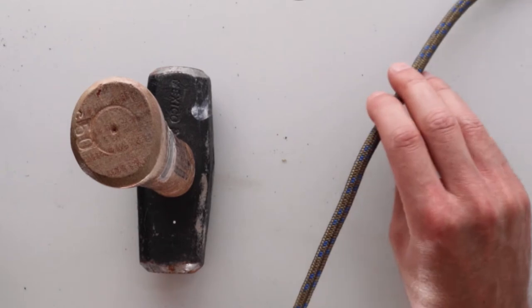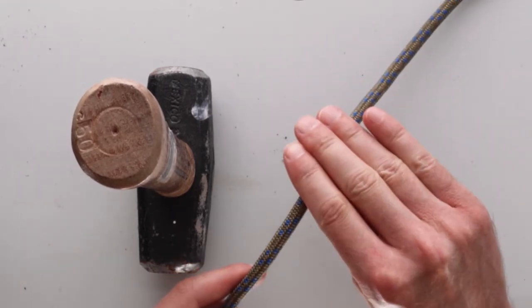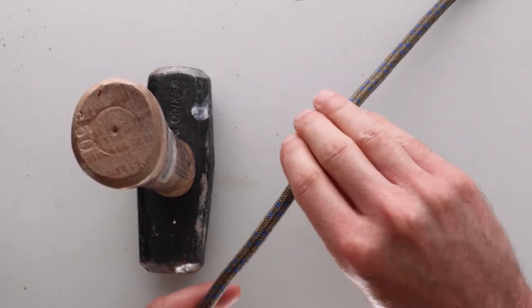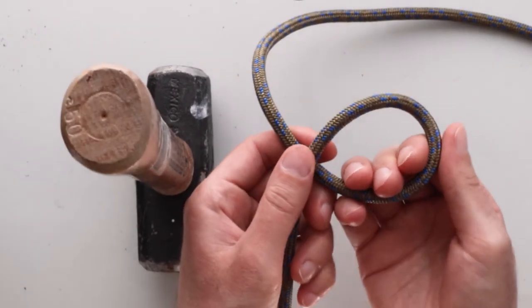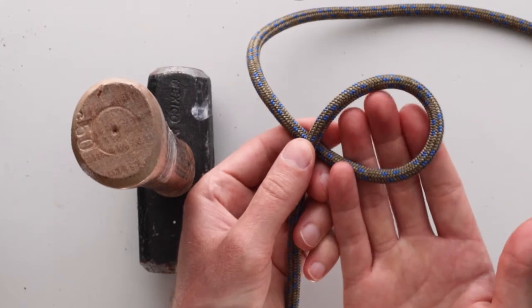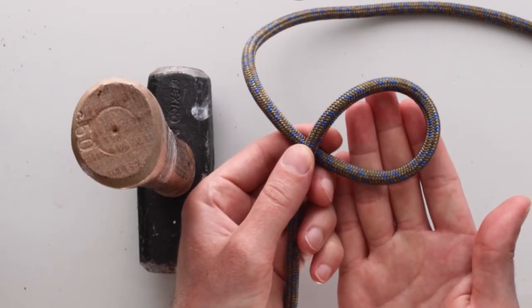How you do this is you get your line and grab it like so. Then what you're going to do is twist to form a loop by turning your wrist away from yourself. When you're done making your loop, your wrist or your palm should be facing up like so.